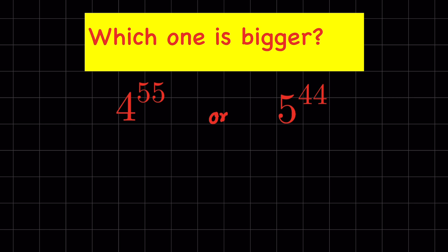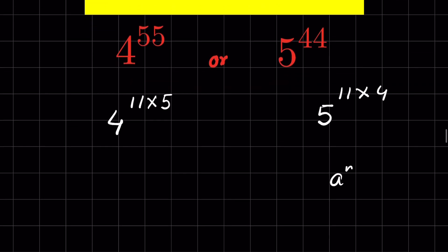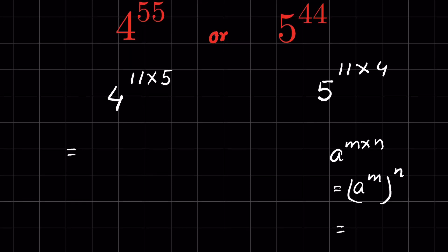So let's try. 4 raised to the power 55 can be written as 4 raised to the power 11 times 5, and 5 raised to the power 44 as 5 raised to the power 11 times 4. Now, using the property that a raised to the power m times n equals a raised to the power m, whole raised to the power n, we can rewrite both sides.